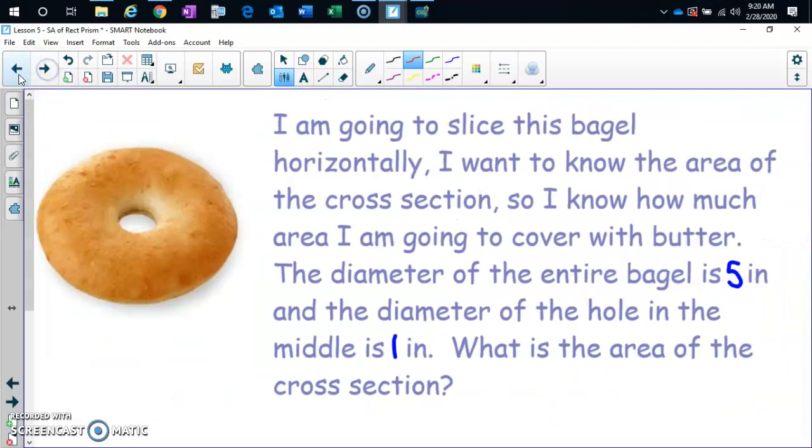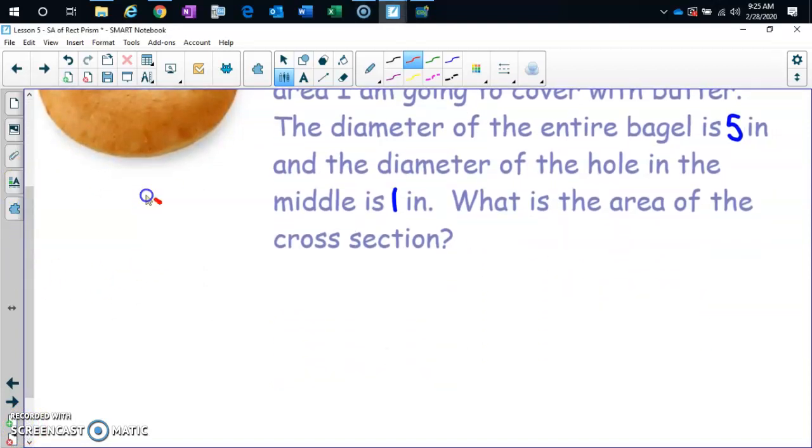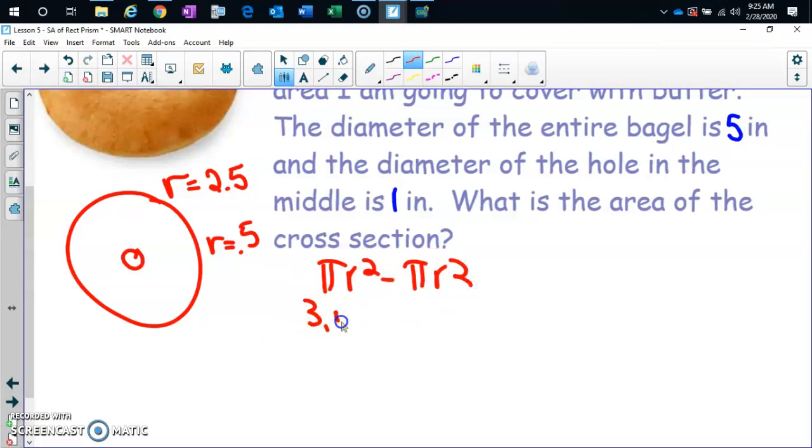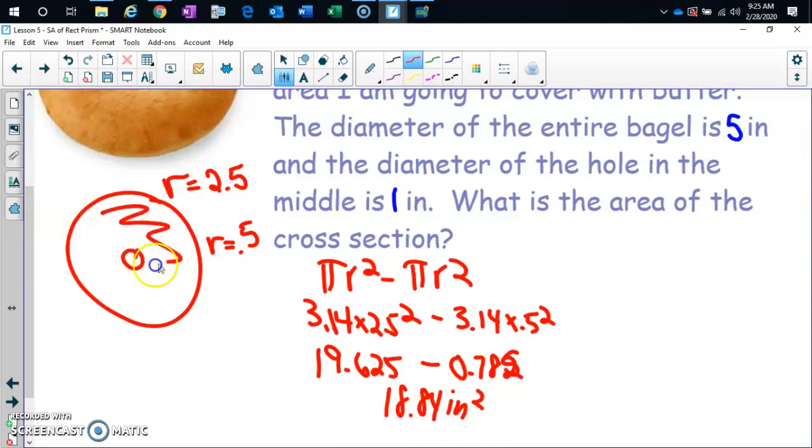All right, here we go. Same type of problem as yesterday, but the numbers are changed. Hit pause right now. All right, when you do this, this is what your picture looks like. The radius of the entire bagel is 2.5. The radius of the hole in the center is 0.5. We're going to do the area of the entire thing minus the area of that hole. So pi r squared minus pi r squared, 3.14 times 2.5 squared gives you 19.625 minus 3.14 times 0.5 squared gives you 0.07825. And when you subtract, you get 18.84 inches squared because this is where the butter would be.